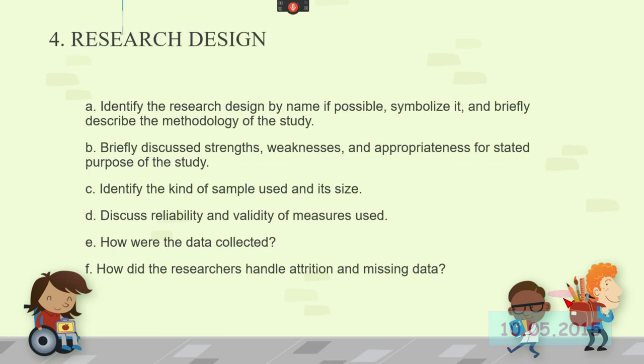The research design. Identify the research design by name if possible. Symbolize it and briefly describe the methodology of the study. Very few quantitative research studies are going to be identifying their research design by name. However, sometimes you'll see it identified quite clearly, even in the title. So if you have a title that mentions the word double blind study, you know that you've got a particular type of study. And that may be the only place in the whole document that they mention that.